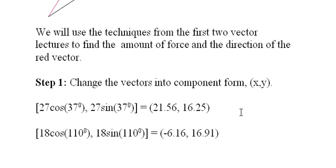Step one: we change these vectors into component form, x and y form on the Cartesian coordinate system. We do that by multiplying the length of the vector—this is the long vector first, which is 27 newtons long—times the cosine of the angle for the x value, and 27 times the sine of the angle gives us the y value.